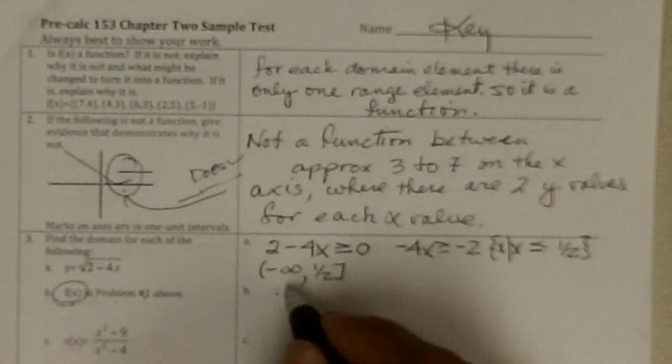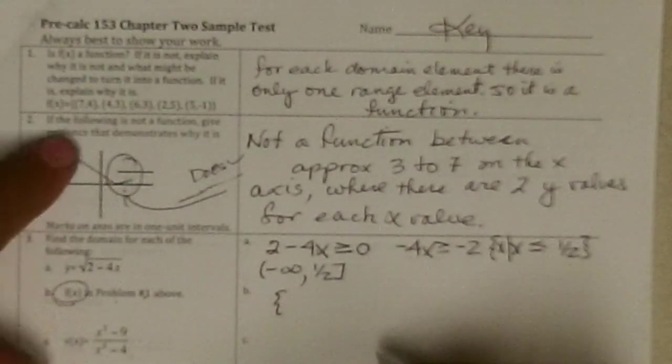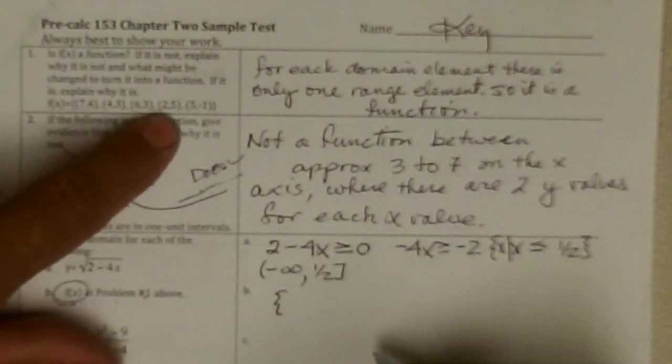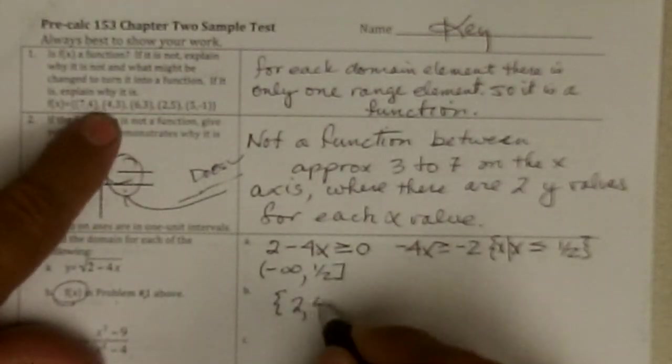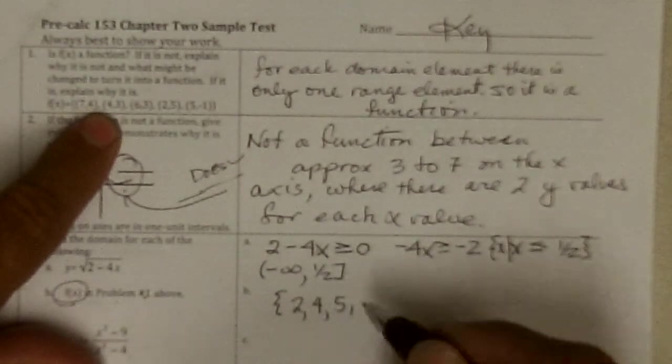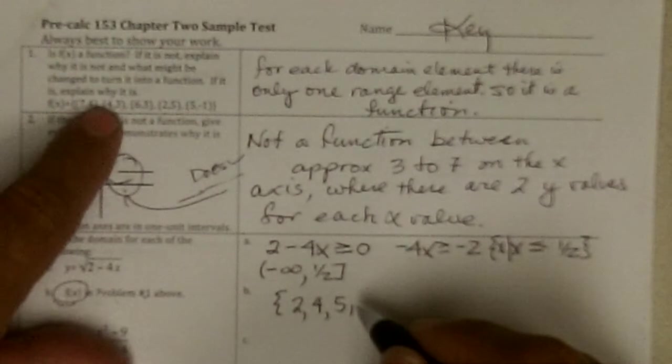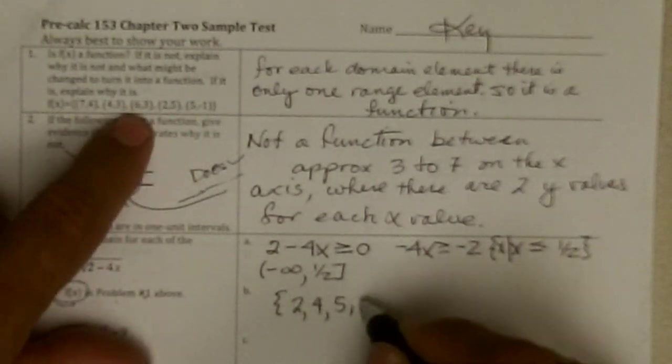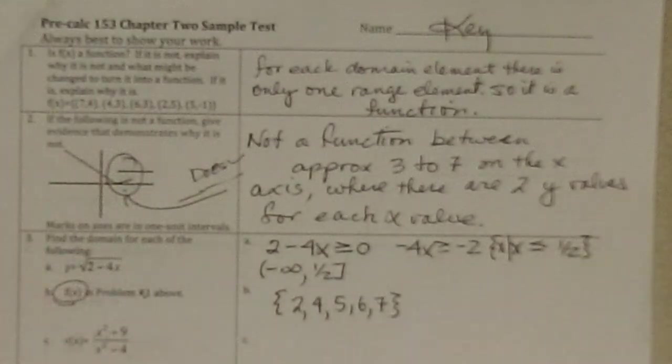So the domain has five numbers, none of the numbers in between those five, so I can't do interval. So I need to make a list of them. And if we start with the smallest, it's 2, and then we have 4, and we have 5, 6, and 7. And that's the complete domain of f.